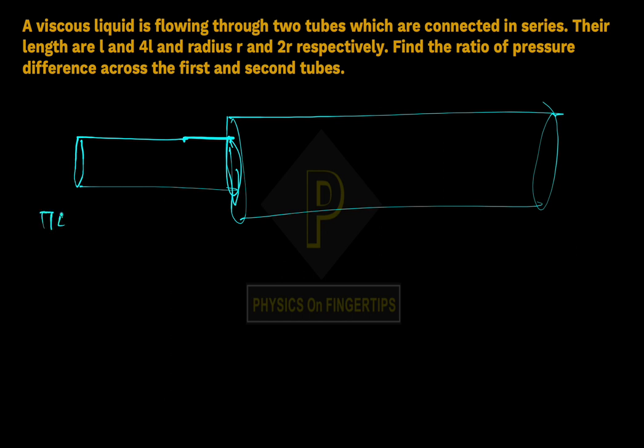Using Poiseuille's law: π times ΔP₁ times R₁ to the power 4. ΔP₁ is the pressure difference for the first tube. The denominator is 8ηL.